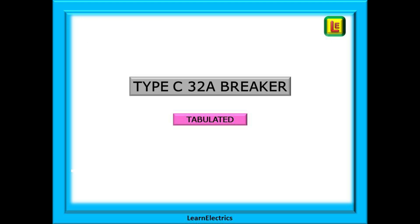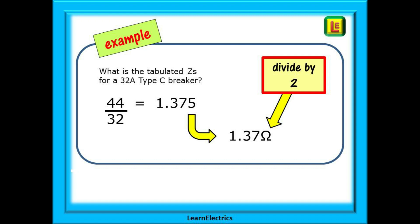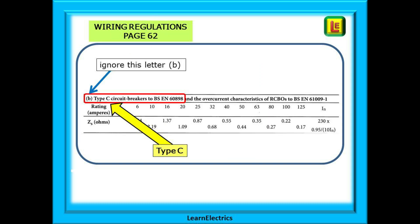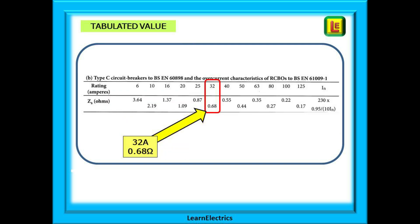Going back to a 32 amp breaker, as this is a popular size, let's calculate the tabulated ZS for a type C device. Calculate 44 divided by 32 just as before — again we have 1.375 ohms, but now we must divide this by 2 to arrive at our final answer. 1.375 divided by 2 is 0.68 ohms after a little rounding. So for a type C breaker, just find the ZS for a type B and then divide by 2. We can check this on page 62 — find the row type C (section B of the table is for type C breakers). Find 32 amps and the number 0.68 is shown.